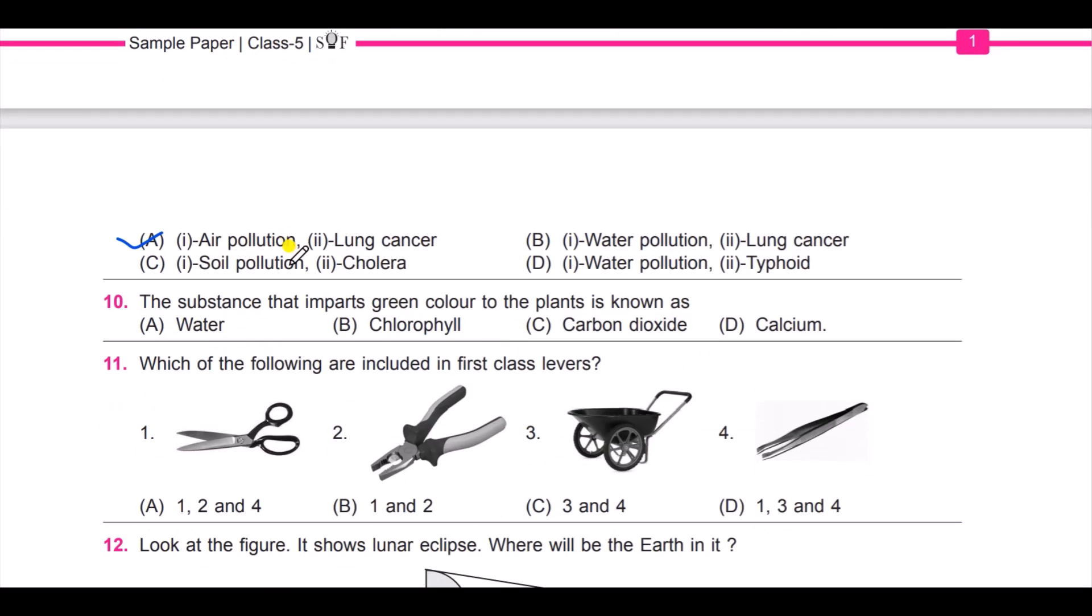Next question: the substance that imparts green color to the plants is known as—water, chlorophyll, carbon dioxide, or calcium. It is B: chlorophyll.